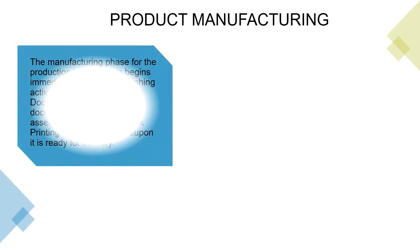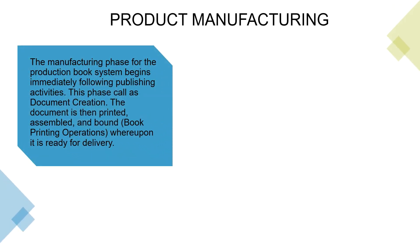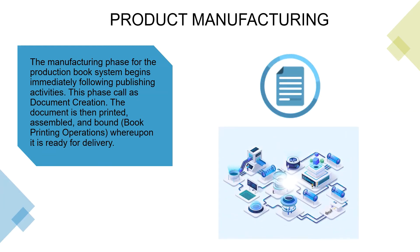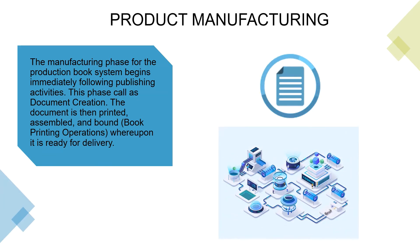Product manufacturing: the manufacturing phase for the book production system begins immediately following publishing activities. This phase covers document creation. The document is then printed, assembled, and bound, whereupon it is ready for delivery.